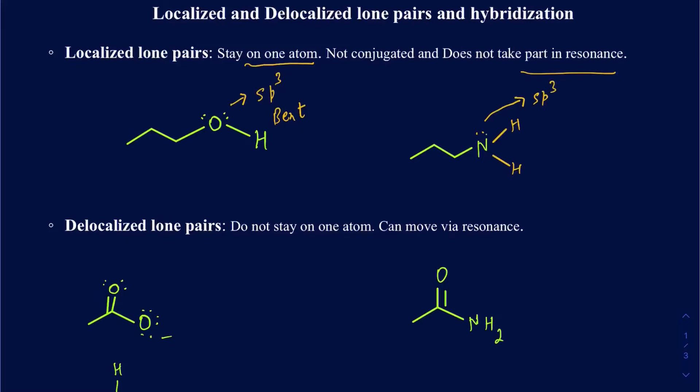Since there is one lone pair, the structure around this nitrogen — the geometry around this nitrogen — is going to be a trigonal pyramid.